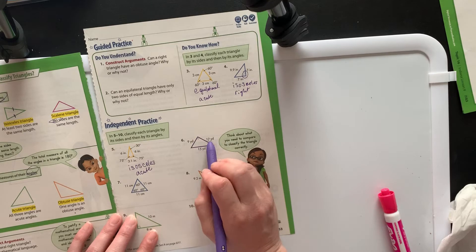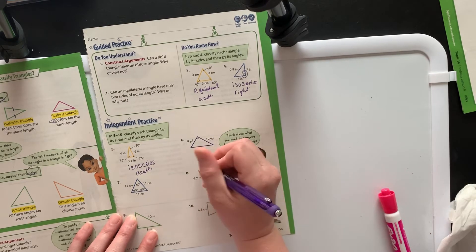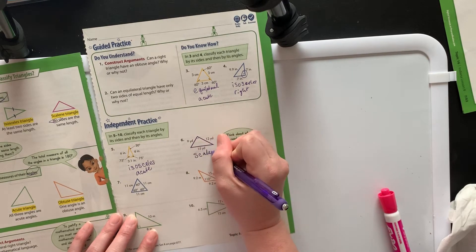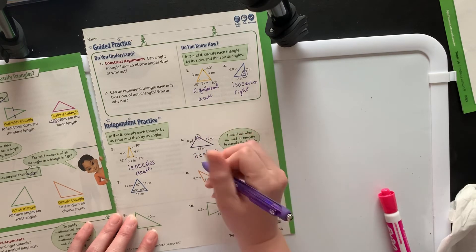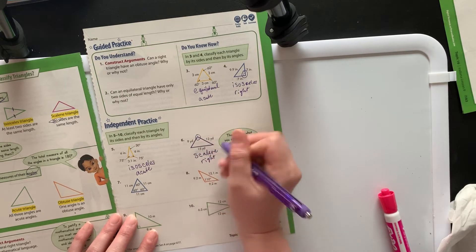For this one, I've got three sides. None of them are the same length, so that's going to be scalene. And then I've got one right, and if there's one right, that makes it a right triangle.